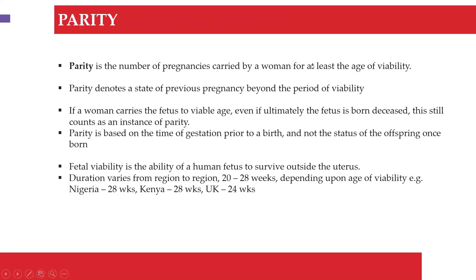Parity is the number of pregnancies carried by a woman to at least the age of viability. It denotes a state of previous pregnancy beyond the period of viability. When a woman is currently pregnant, we don't count that current pregnancy in the parity — it's the previous ones. If a woman carries a fetus to a viable age, even if the fetus is born deceased, that still counts as an instance of parity. Parity is based on the time of gestation, not the status of the offspring.